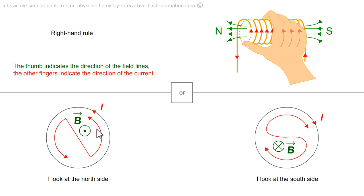We saw in the video on the bar magnet that the magnetic field comes out from the north face. When I look at a face where the current is turning clockwise, I see a south face. This is the side of the coil where the magnetic field enters.